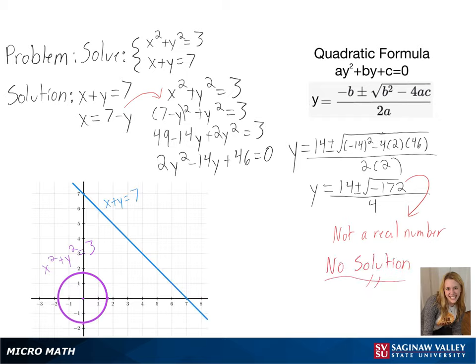We can also graph our equations by using our x and y intercepts and slopes. And we can again see that our equations do not intersect, and with that, our problem is finished.